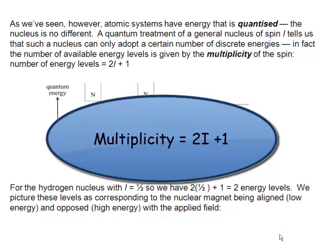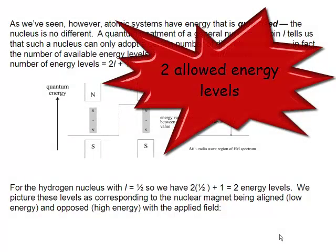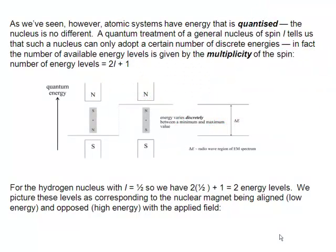The multiplicity is 2I plus 1, where I is the spin quantum number. Well, for the hydrogen nucleus, we only have I equal to one-half, so the number of energy levels we have is two. So quantization tells us that there are only two allowed energy levels for the hydrogen nucleus in terms of our spin levels.